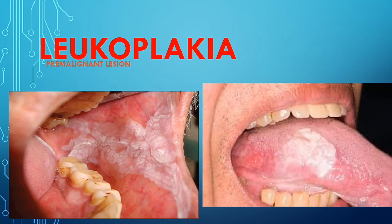Hello guys, today we are going to talk about leukoplakia. This is a pre-malignant lesion — pre-malignant lesions are diseases that occur just before cancer. These pre-malignant lesions have a high chance of developing into cancer. Here's a picture of leukoplakia: they are white patches or plaques in the oral cavity. In this video we are going to talk about the causes of leukoplakia, its clinical features, histological features, as well as some treatment.